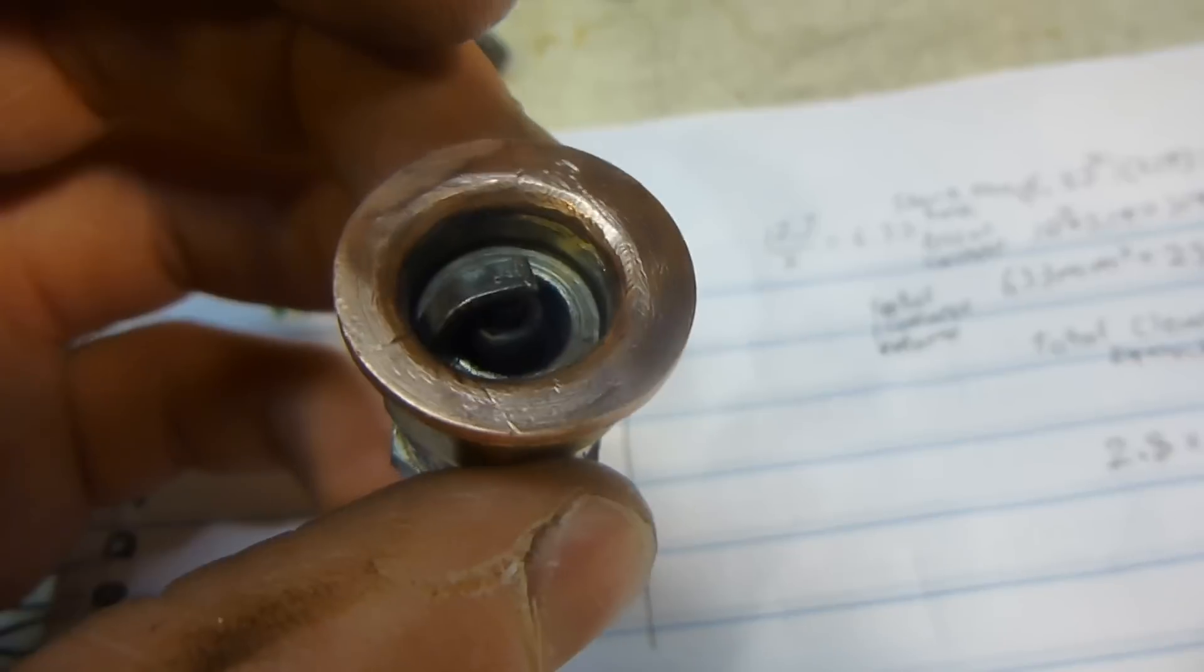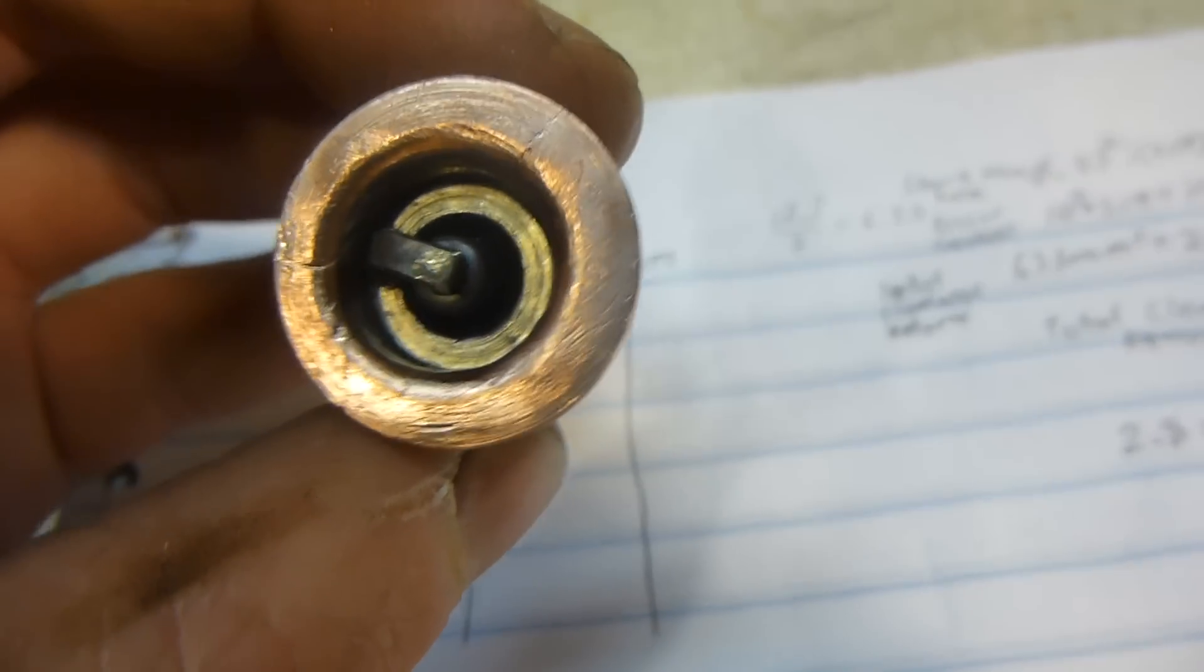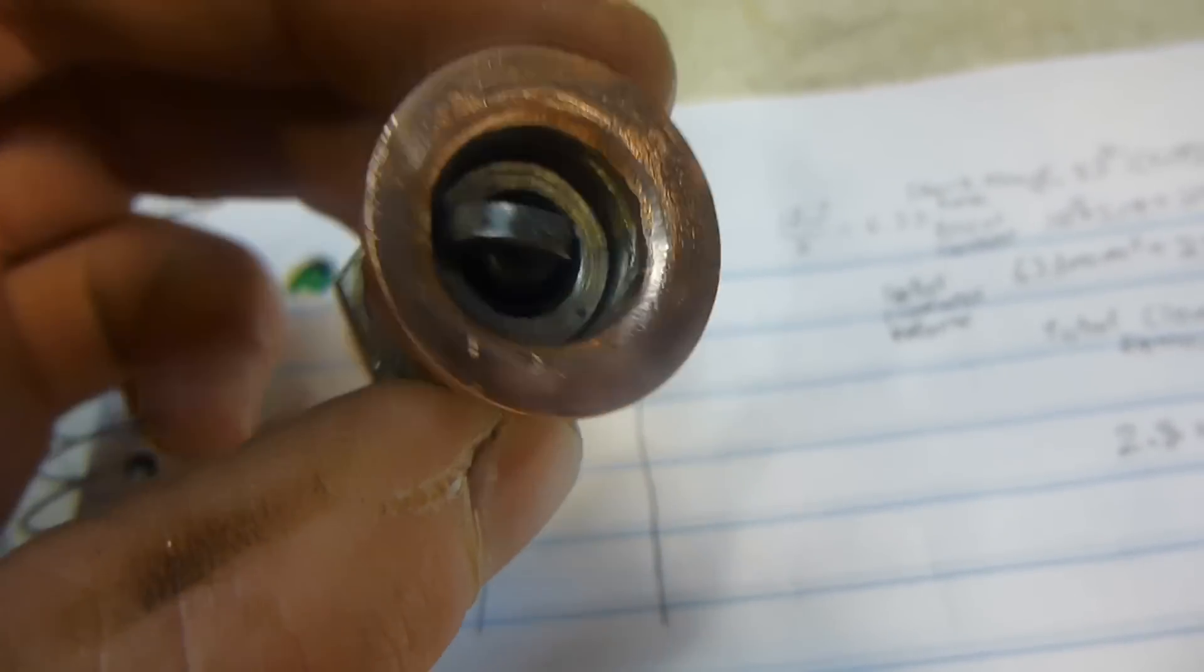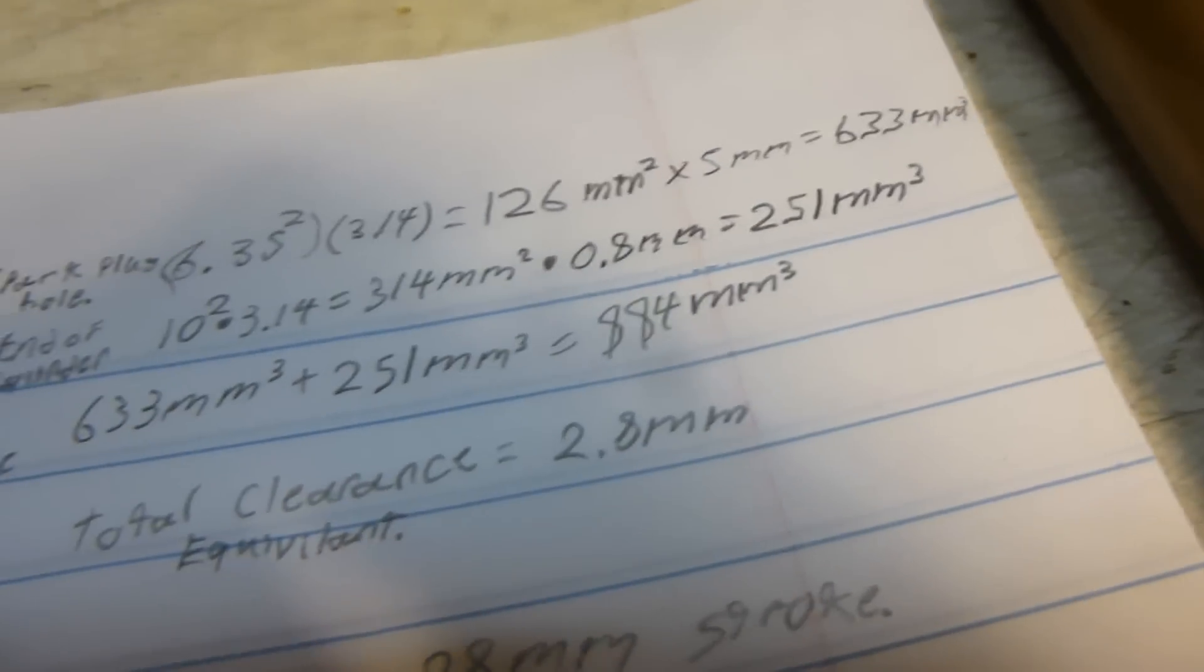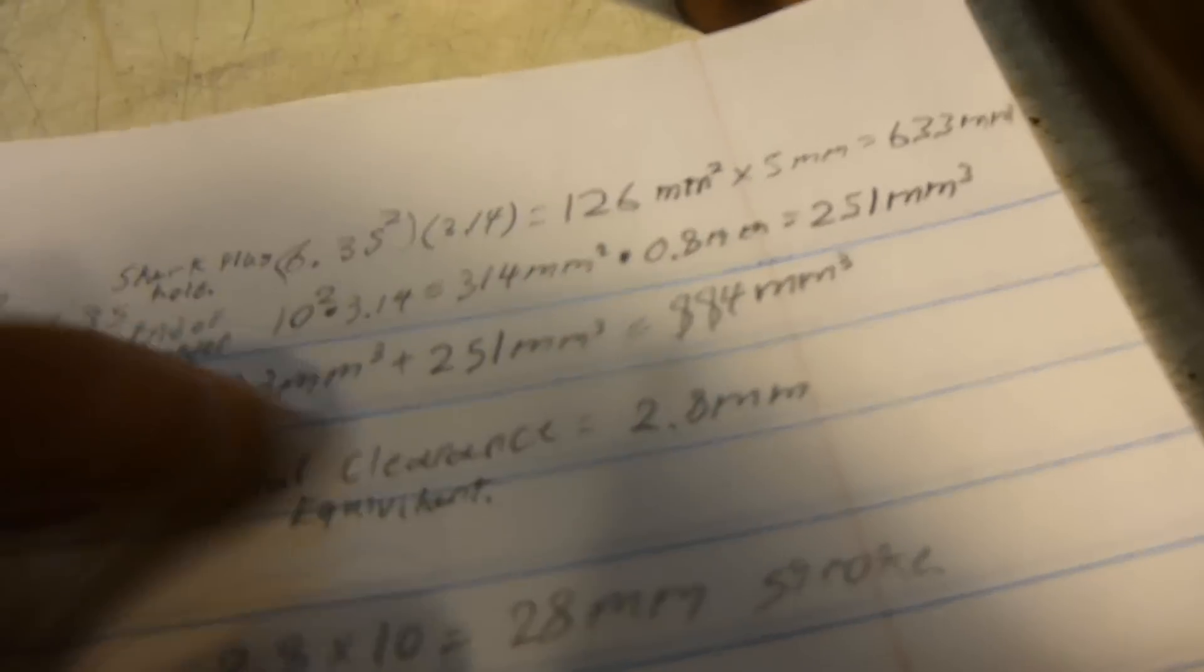That's supposed to let the terminals on the spark plug heat up to a certain temperature and burn off the carbon. I'm probably not going to get much carbon on there with the amount I'm going to run this. So there's the measurements and the area comes out to be, let's see...